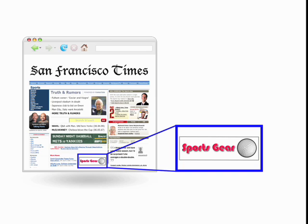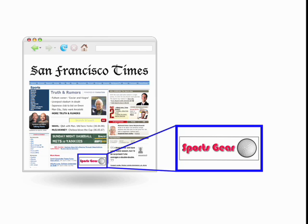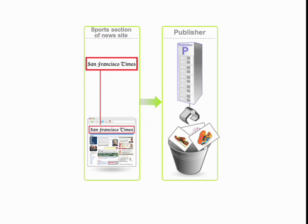My interests might also inform which ads I'm shown. For instance, I often visit the sports section of a news site. The publisher of that site might then identify my browser as belonging to a sports enthusiast interest segment, and I may start seeing sneaker ads more often than insurance ads.